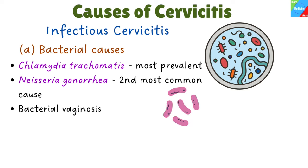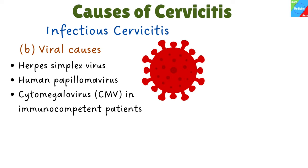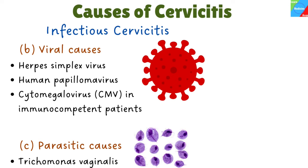The other cause is bacterial vaginosis, which is the overgrowth of bacteria that are normally present in the vagina. Bacterial infections caused by Mycobacterium tuberculosis and Group B Streptococcus occur rarely. The viral causes of infectious cervicitis are herpes simplex virus, human papillomavirus, and cytomegalovirus to a lesser extent in immunocompetent patients. The parasitic cause of cervicitis is Trichomonas vaginalis.